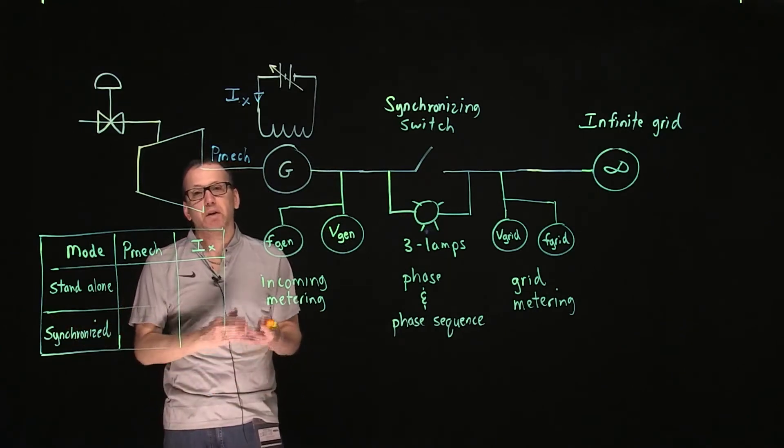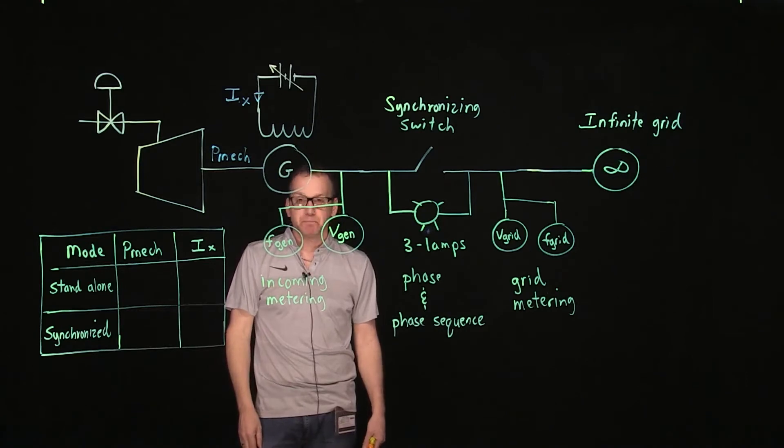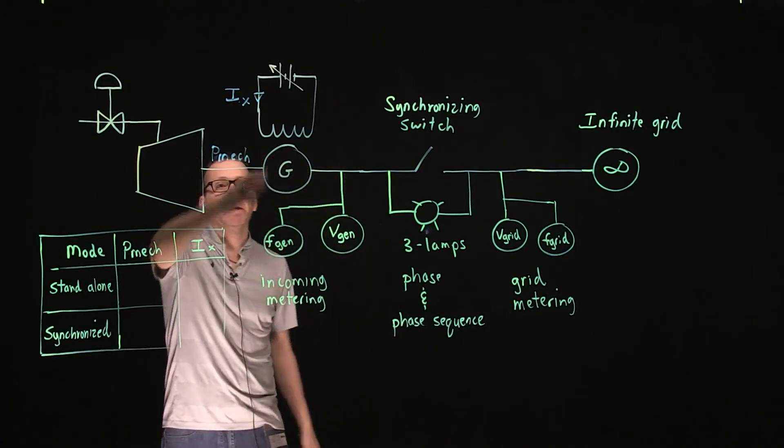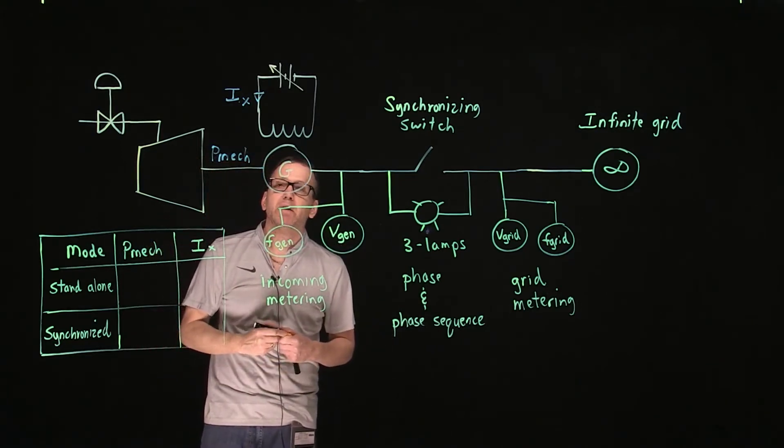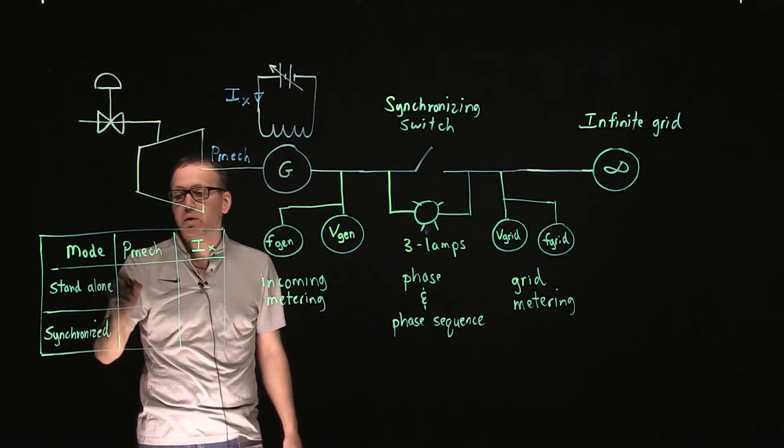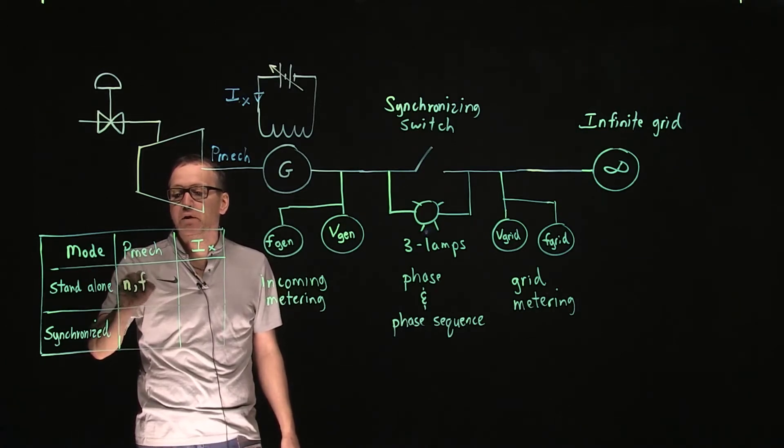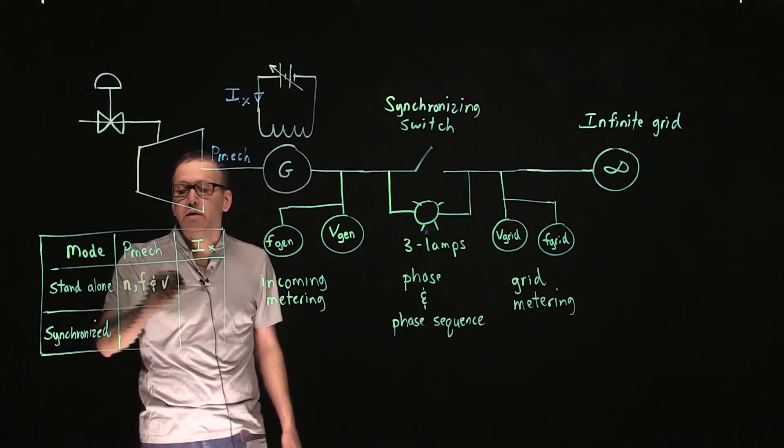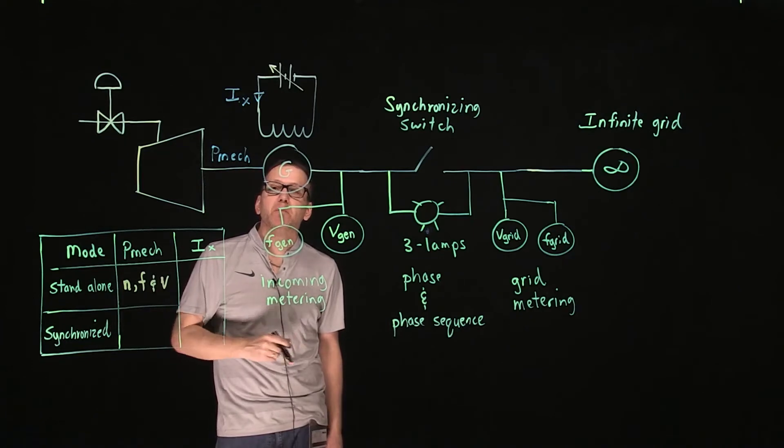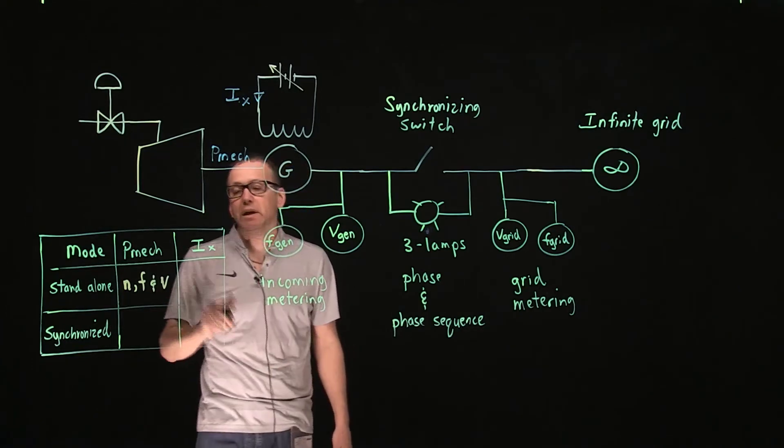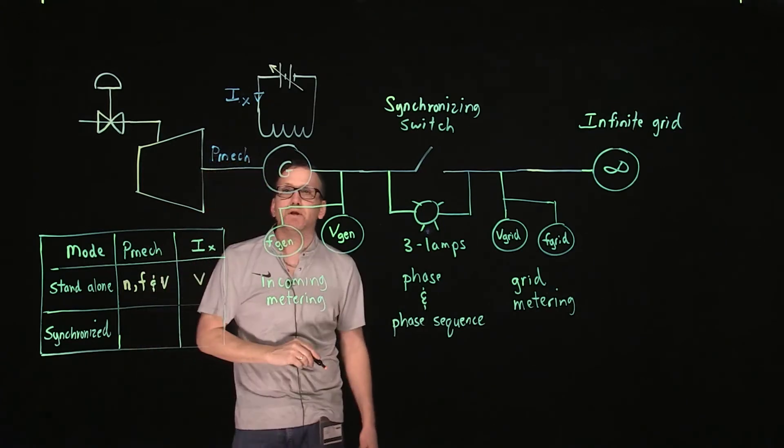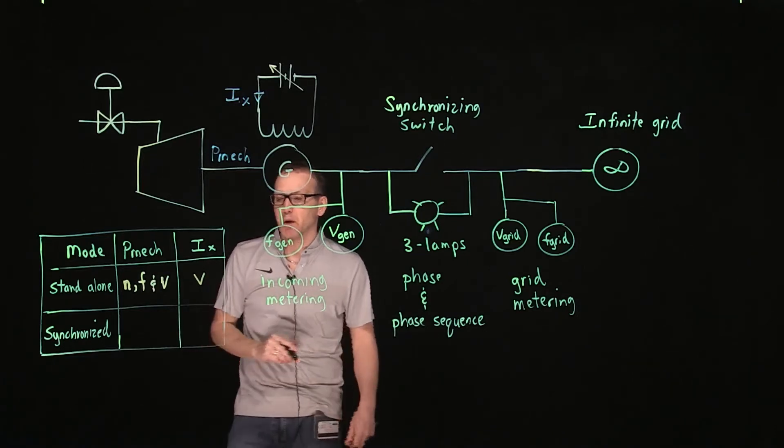In standalone mode, we observed that the mechanical power input to the generator from the turbine, or in our case the prime mover, affects the speed, frequency, and output voltage. That's what adjusting the mechanical power on the shaft of the generator does. The excitation current can only control the voltage output of the generator.